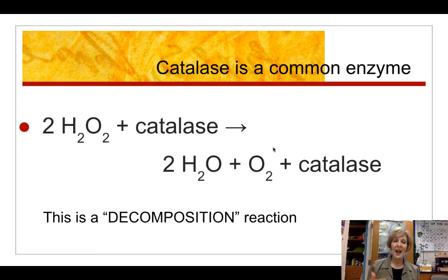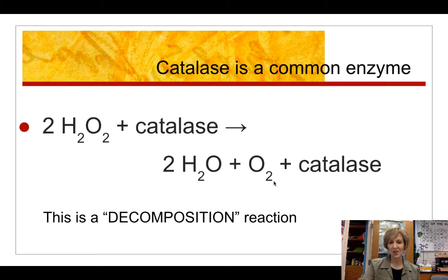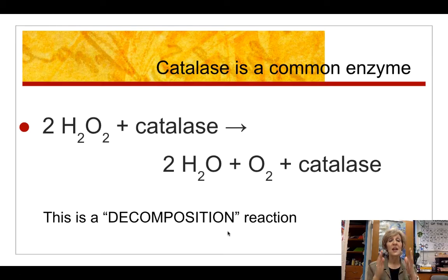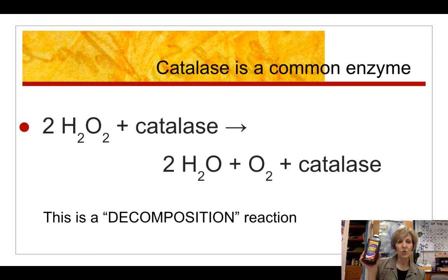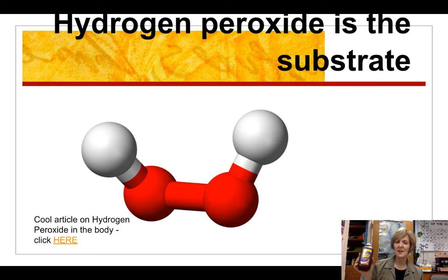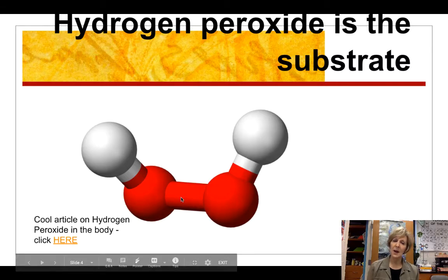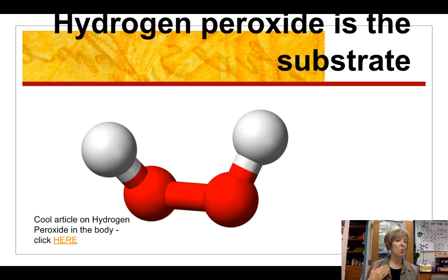So what does catalase do? Catalase breaks down hydrogen peroxide — H₂O₂ — into water and oxygen. This is a decomposition reaction, where you have one substrate on the reactant side and several products. Our substrate is H₂O₂ hydrogen peroxide, and our enzyme is catalase. Hydrogen peroxide is a pretty simple molecule: two oxygen atoms and two hydrogen atoms. We actually make hydrogen peroxide as a waste product in some of our metabolic reactions in the cell.